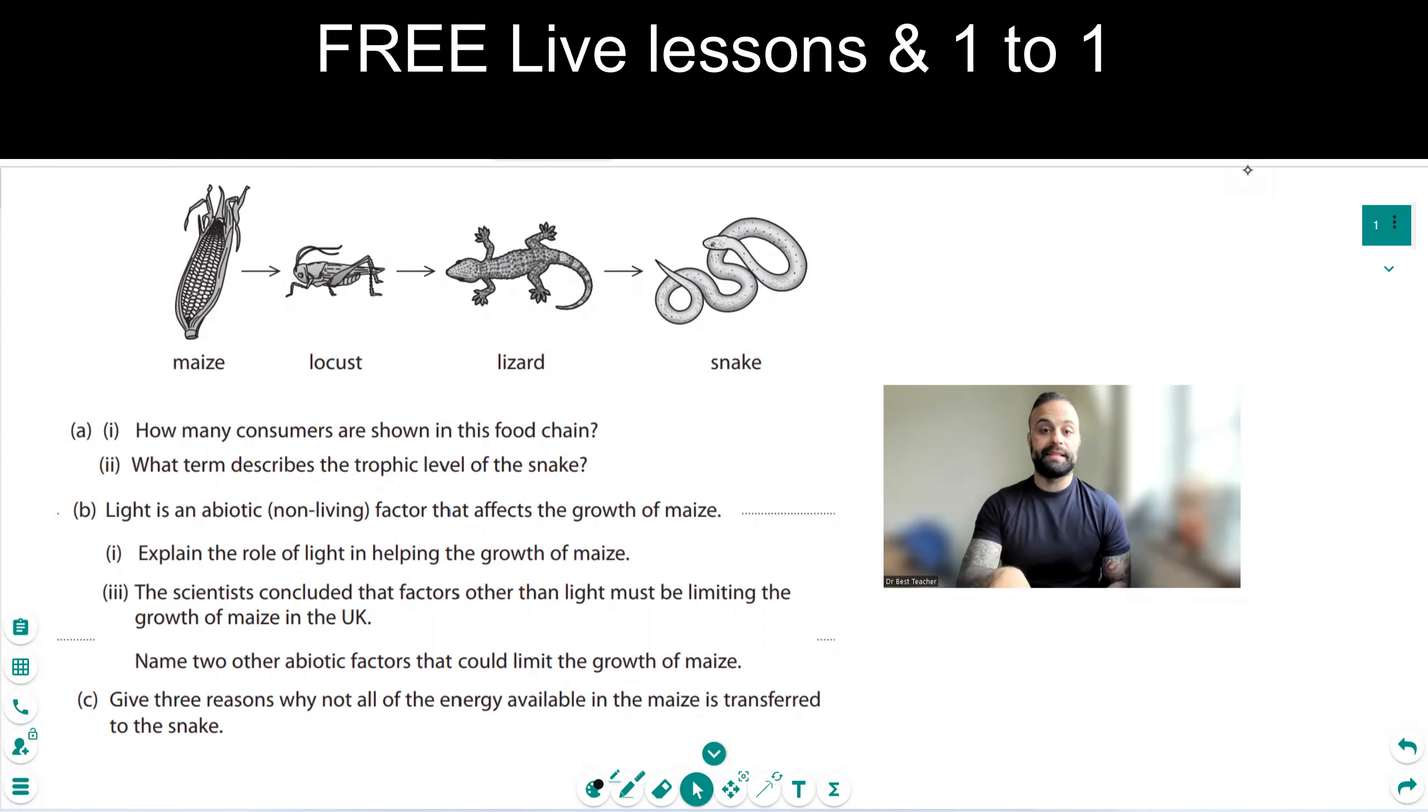How many consumers are there in this food chain? So we've got the producer over there. This is a consumer because it eats the producer. This is a secondary consumer because it eats that one. And this is the tertiary because it eats that one. So it's three.